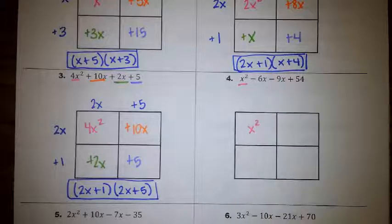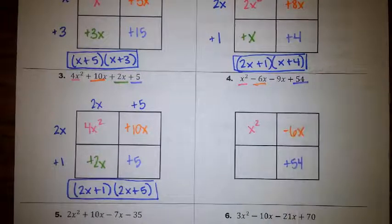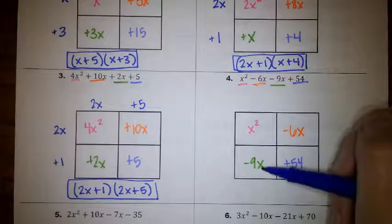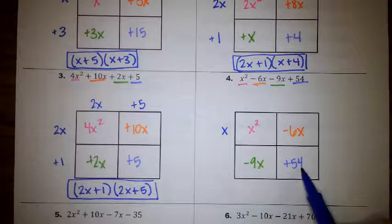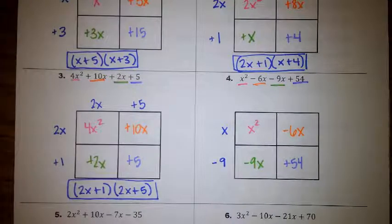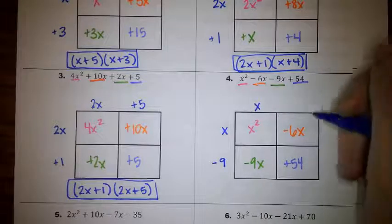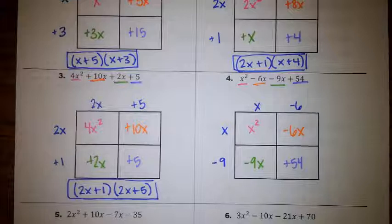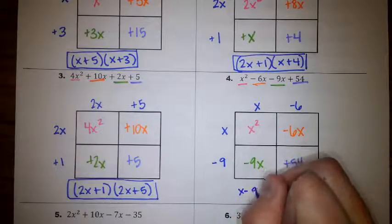In the first box we have x squared, in the last box positive 54, and the middle terms are negative 6x and negative 9x. Between x squared and negative 6x we pull out x. Between negative 9x and 54, since the leading coefficient is negative, we pull out that negative — they both share negative 9. In the columns: x squared and negative 9x share x; negative 6x and positive 54 share negative 6. So our two factors are x minus 9 and x minus 6.